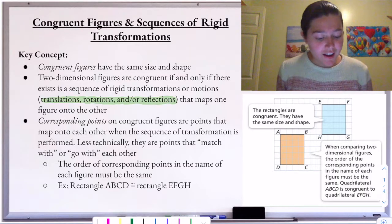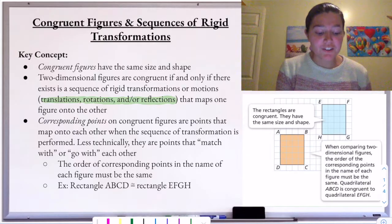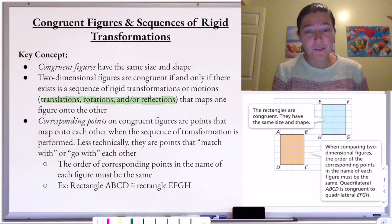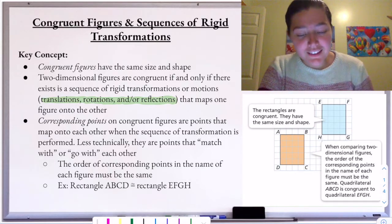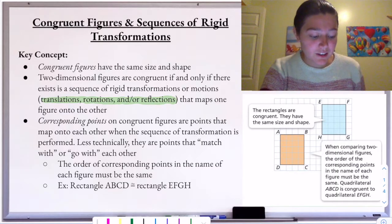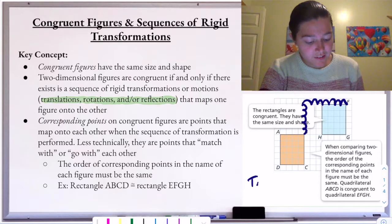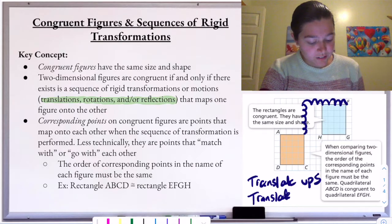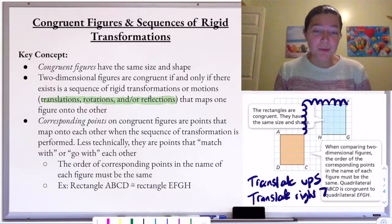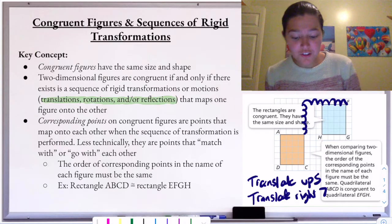Let's look at this example. I have rectangle ABCD and rectangle EFGH. These two rectangles are congruent — they have the same shape and size. We can prove they're congruent by saying that there is a sequence of transformations that will take me from rectangle ABCD to rectangle EFGH. That sequence would be: first translate up five, and then translate right seven. Thus, we can conclude that these are congruent.